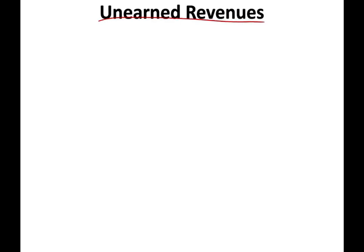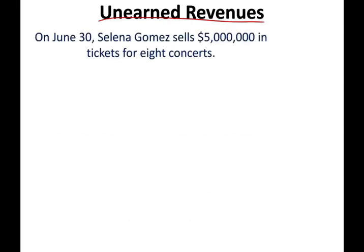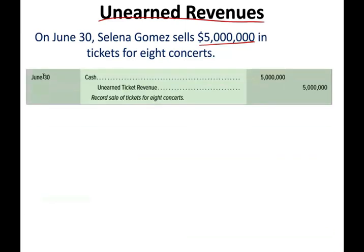The third known liability we're going to work with in this session is unearned revenue. Unearned revenue works when a business is paid up front before they perform the service — they get the money before they perform the service. On June 30th, Selena Gomez sells half a million in tickets for eight concerts. She has the money in her bank account, so she will debit cash and credit unearned ticket revenue $500,000. Notice the word 'unearned' — it's a liability, don't let the word 'revenue' fool you.